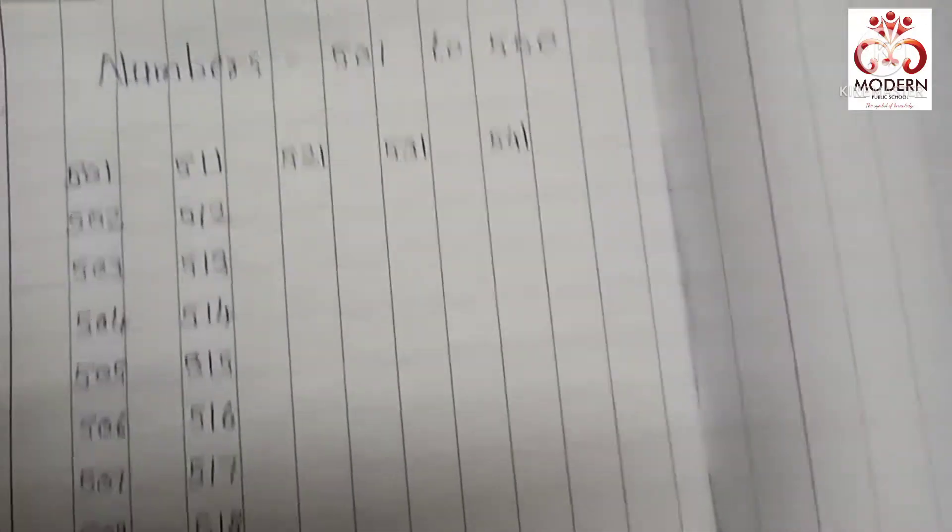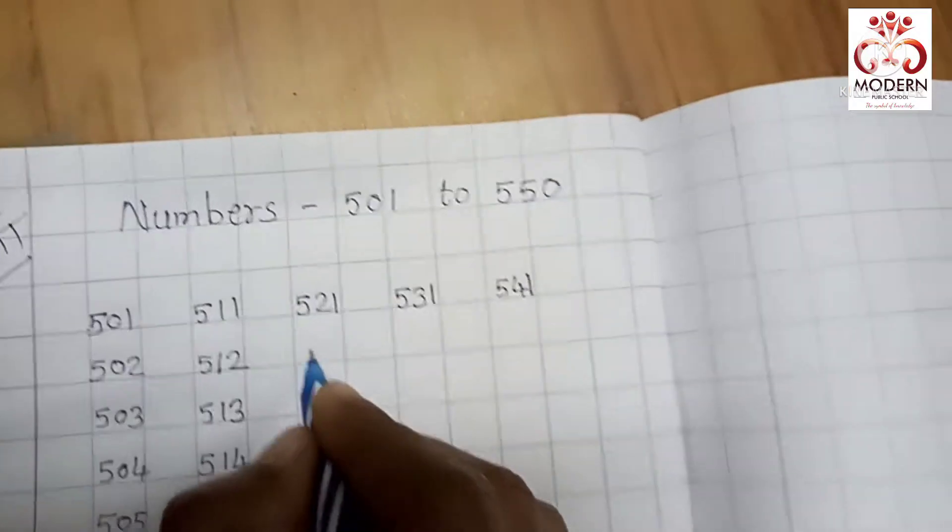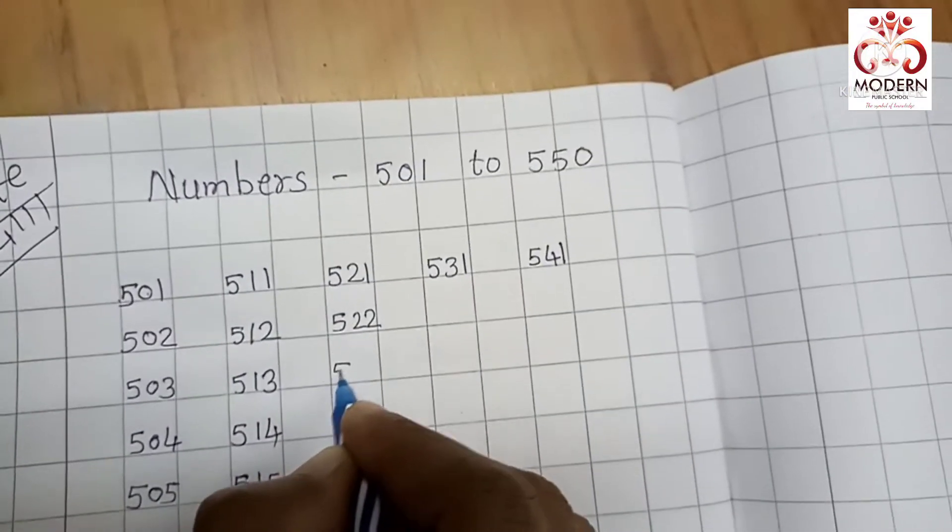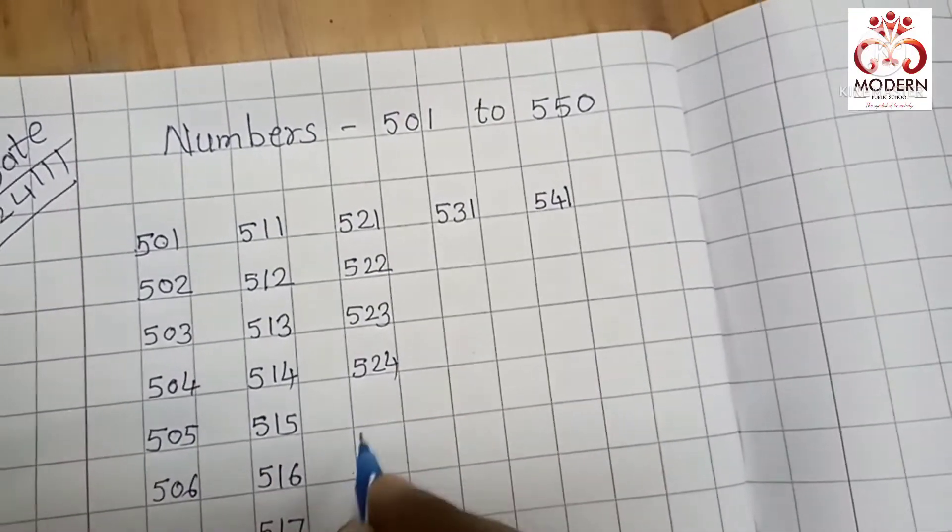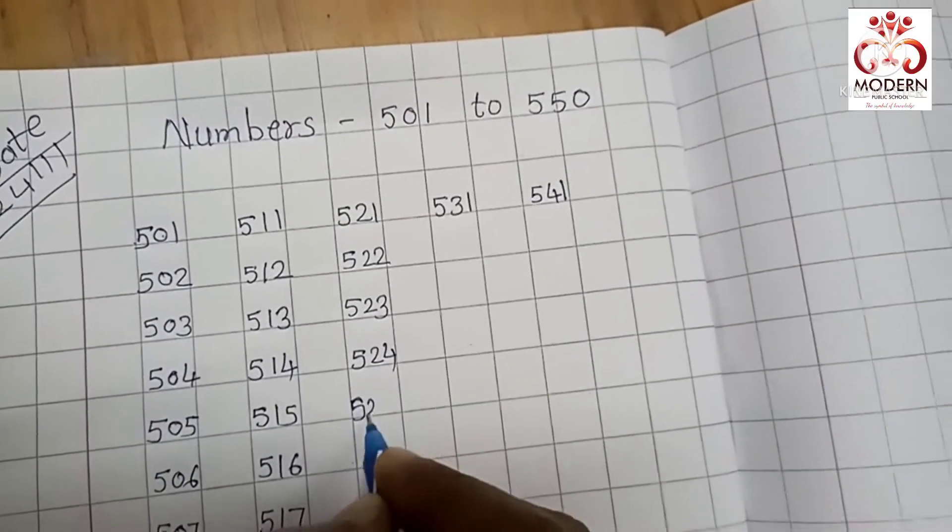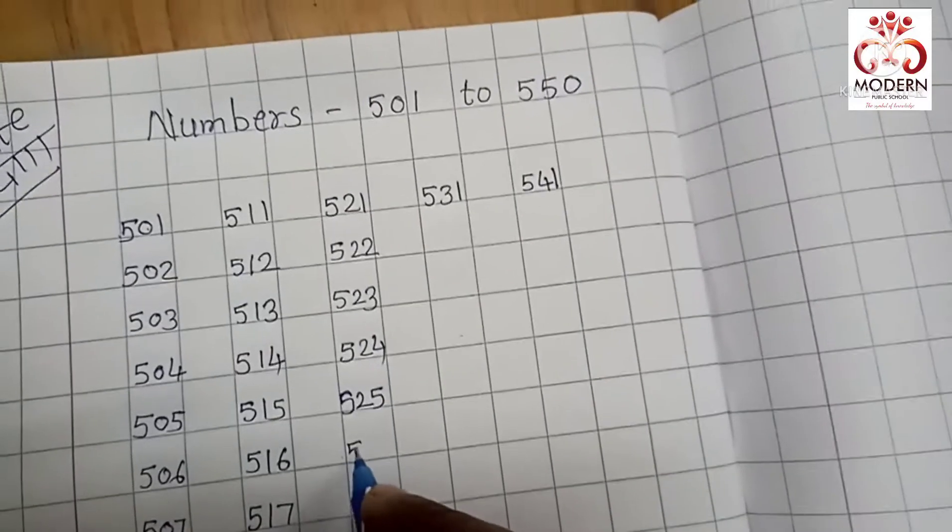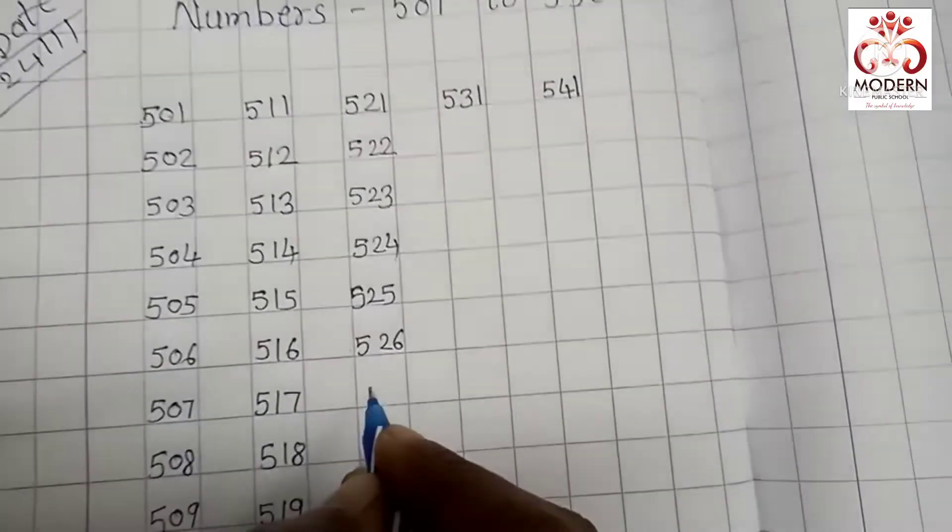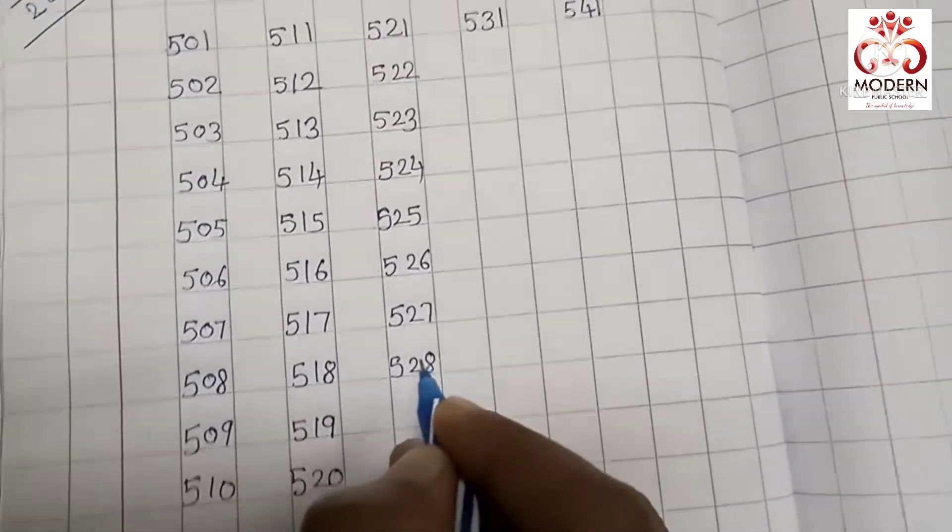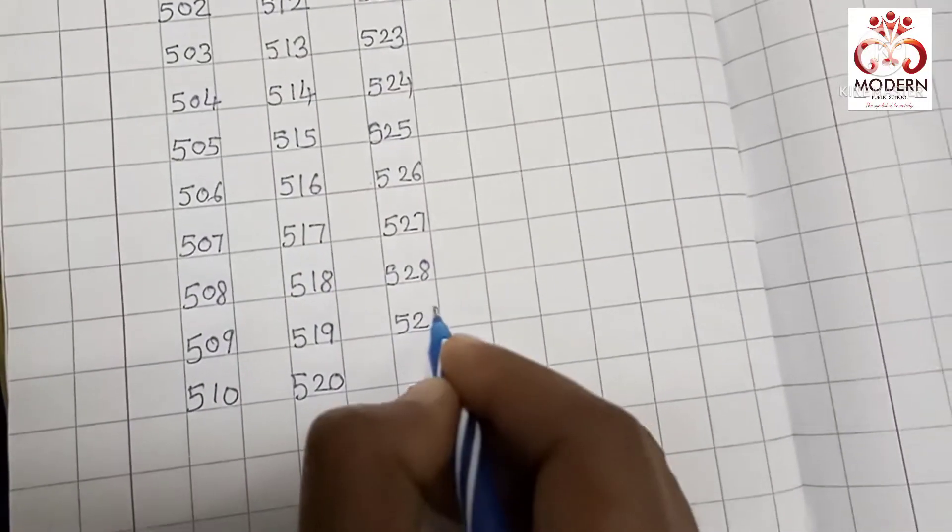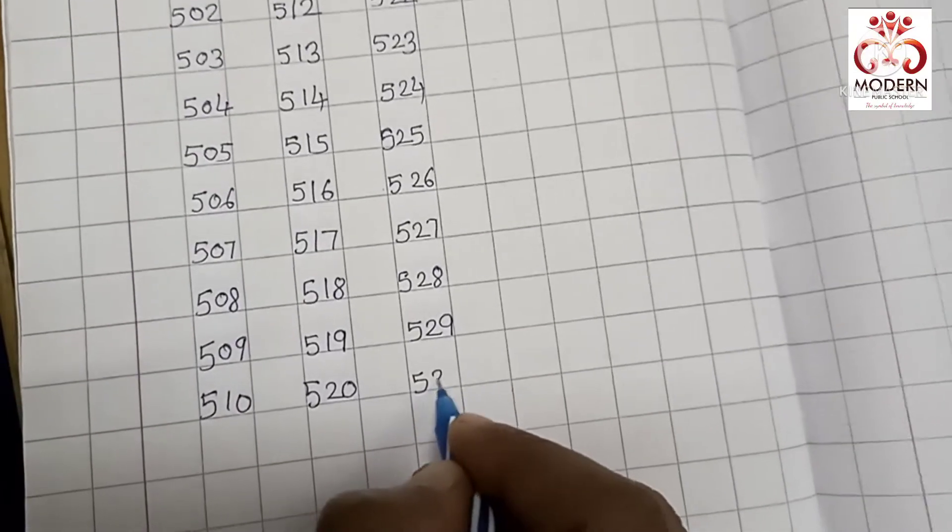Okay. Next is 521, 522, 523, 524, 525, 526, 527, 528, 529, 530.